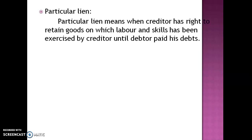The second is particular lien. Particular lien means the creditor has the right to retain the goods on which labor and skill has been exercised by the creditor, until the debtor pays his debt. So the creditor has the right to retain only those specific goods on which labor and skill have been applied.